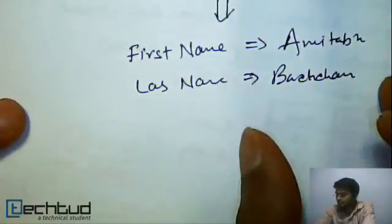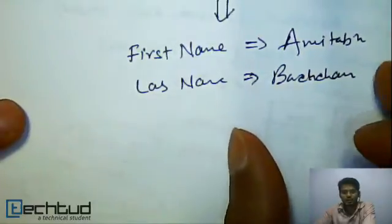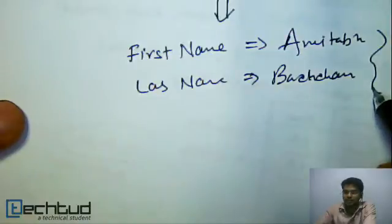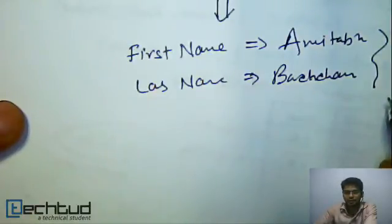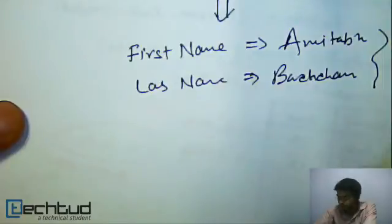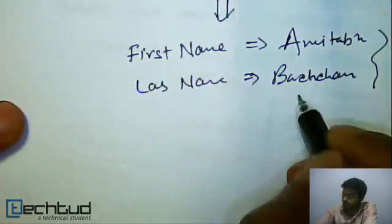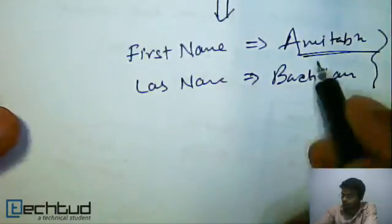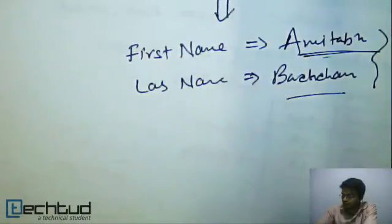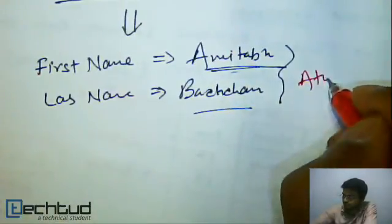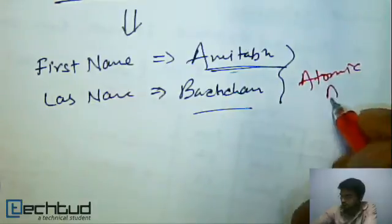So we can divide this into two simple or atomic attributes. An atomic attribute is an attribute which cannot be further divided into sub parts. We cannot divide 'Amitabh' or 'Bachchan' into further sub parts, so these are atomic attributes.